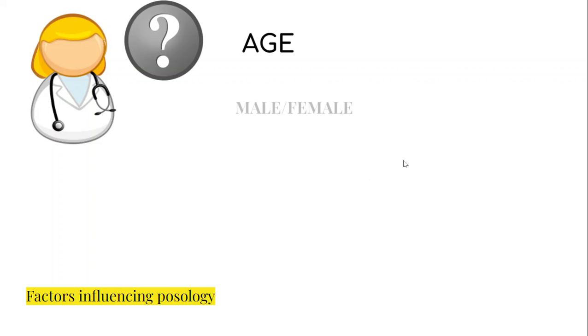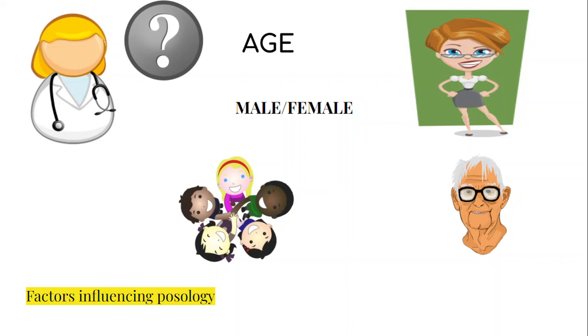Have you ever visited a doctor? Before prescribing medicines, the doctor usually asks about your age and also writes your gender on the prescription form. Ever wondered why? The treatment differs for different age groups. A medicine which is good for a man nearing his 30s might not be good for women, a pregnant woman, an old man, or young children. So let's dive deep and know what factors actually influence posology.